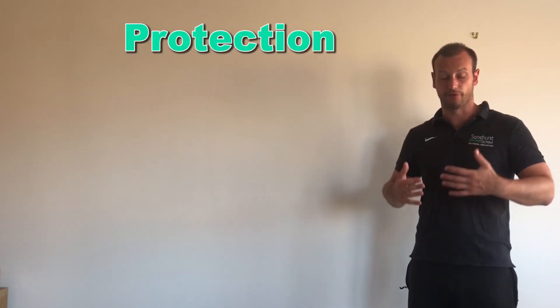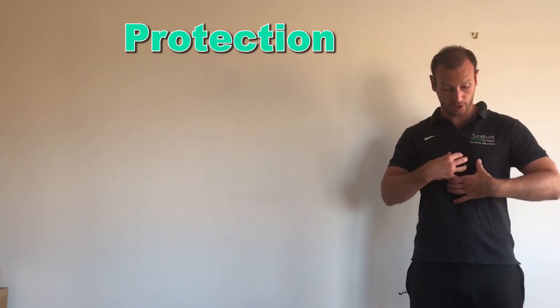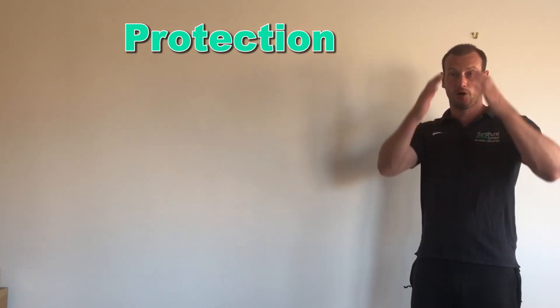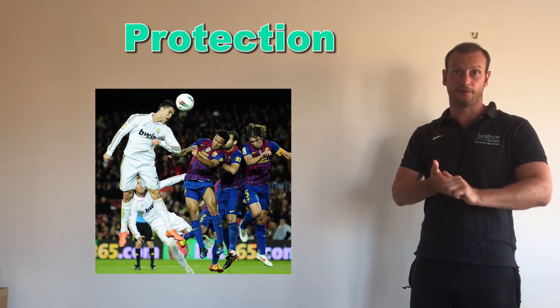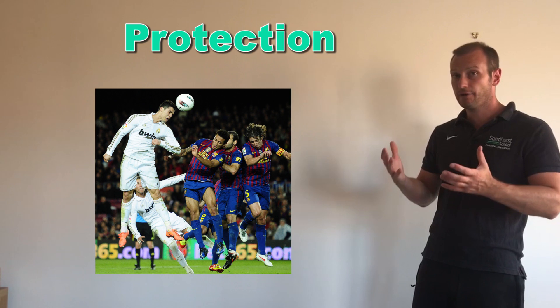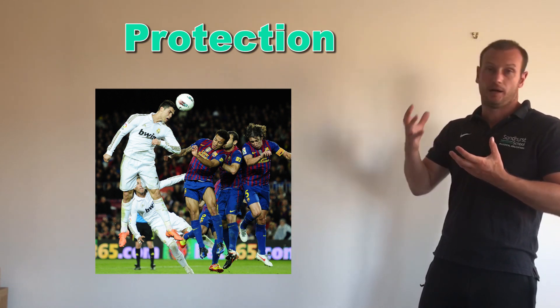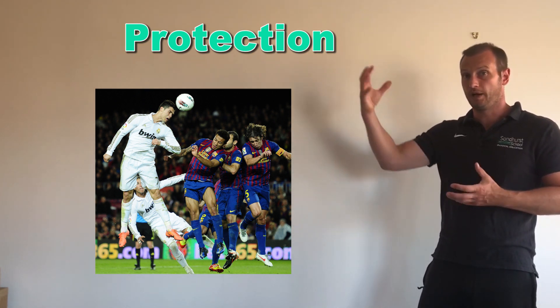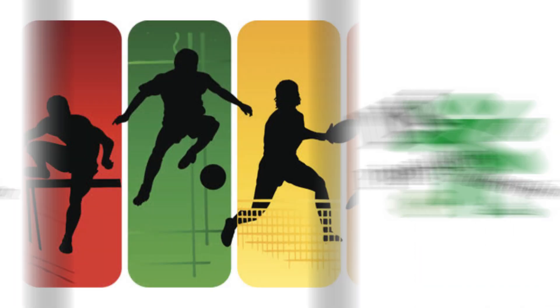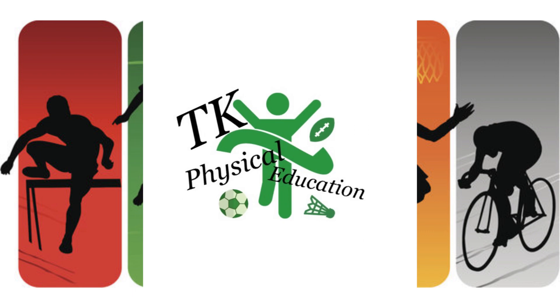The final function of the bones we need to understand is protection. The bones offer protection — for example, the ribs and the sternum protect the heart and the lungs, and the cranium protects the brain from damage when playing sport. An example could be heading a ball in football, where the brain is not damaged by the ball when it contacts the cranium.